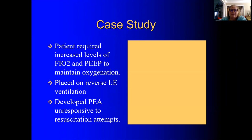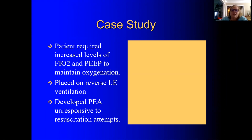Moving into day six — she required increased levels of FiO2 and PEEP. PEEP is positive end-expiratory pressure, which you'll learn about in the ventilation module. As the patient expires, we keep some pressure so the lungs don't close completely — that helps maintain oxygenation. She's placed on a specific setting: reverse inspiratory-expiratory ventilation, which reverses the amount of the respiratory cycle allocated to inspiration versus expiration.